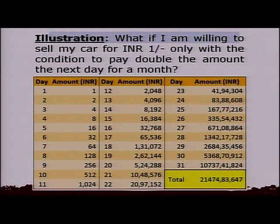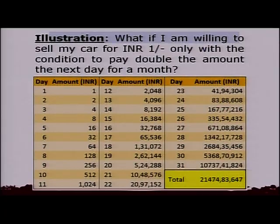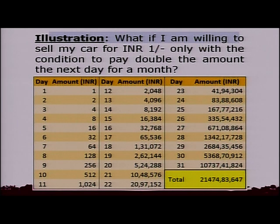Here is a small illustration — you may have read the story about a chess board of 64 squares: one grain is placed on the first square, doubled on the second, doubled again on the third, and so on. The person ended up having his whole kingdom sold. Similarly, what if you sold your car for 1 rupee with the condition to pay double the amount the next day for a month? That 1 rupee, doubling each day, becomes 8 rupees on day 4, 16 rupees on day 5, and by the end of the month — the 31st day — it becomes 214 crore rupees. So just imagine the kind of impact compounding makes.